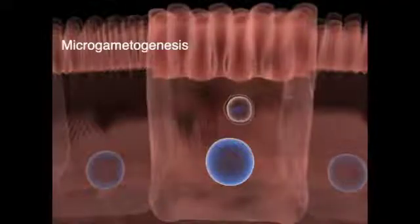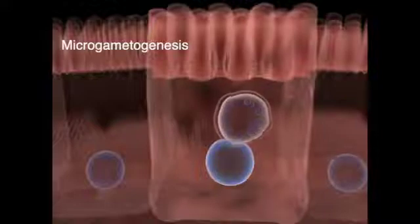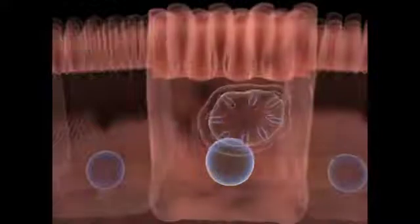Male gametes are called microgametes and are produced by schizogony, but follow a different pathway, resulting in flagellated cells.